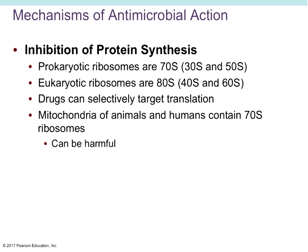We can also inhibit protein synthesis. Prokaryotic cells have 70S ribosomes — a 30S subunit and a 50S subunit — while eukaryotic cells have 80S ribosomes, made up of a 40S and a 60S subunit. We can have drugs that selectively target translation at the 70S ribosome level, so if we can't go from the language of nucleic acids to the language of proteins, the protein is not going to be made and the cell won't function.